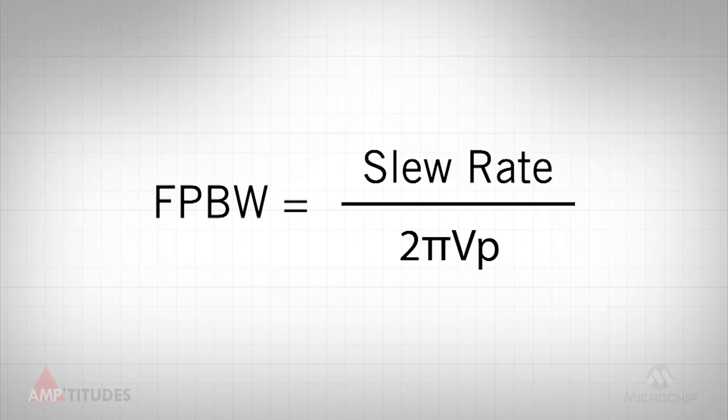The slew rate is needed in order to calculate the full power bandwidth of an amplifier, which is the maximum frequency at which the amplifier does not distort the signal due to its limited slew rate, as shown here, where VP is the peak output swing of the amplifier.